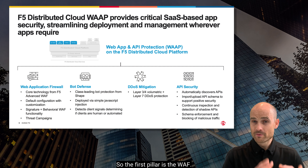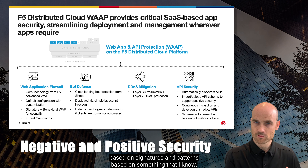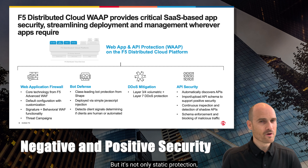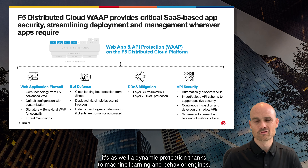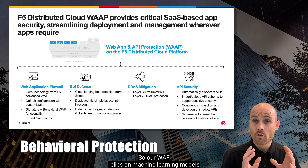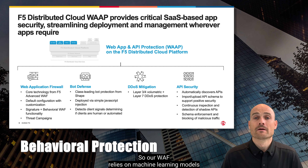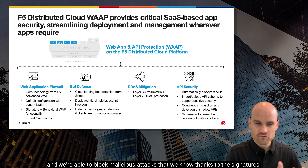The first pillar is the WAF. A WAF is a negative and positive security based on signatures and patterns — based on something that I know. But it's not only static protection; it's also dynamic protection thanks to machine learning and behavioral engines. Our WAF relies on machine learning models and we're able to block malicious attacks that we know, thanks to the signatures.